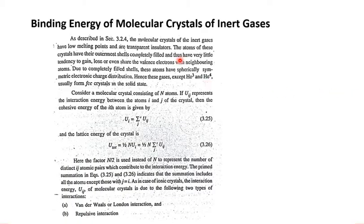The molecular crystals of the inert gases have low melting points and are transparent insulators. The atoms of these crystals have their outermost shells completely filled, and thus have very little tendency to gain, lose, or share the valence electrons with neighboring atoms. Because their outermost shells are completely filled, the tendency to gain, lose, or share is very low.